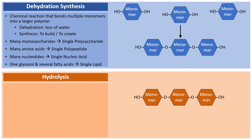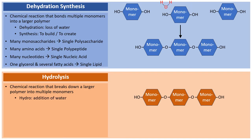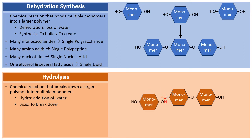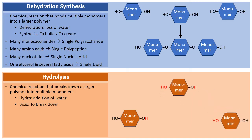On the blue side, dehydration synthesis builds three monomers into a single polymer. Now focusing on hydrolysis: this is the opposite reaction — it breaks down a larger polymer into multiple monomers. 'Hydro' implies the addition of a water molecule and 'lysis' means to break down. Water is added, the monomer on the left breaks away, and repeating this process breaks all the monomers apart, going from one single polymer to three individual monomers.